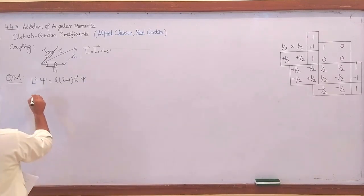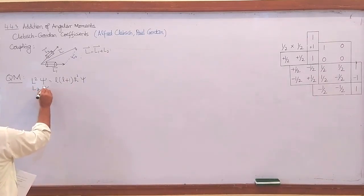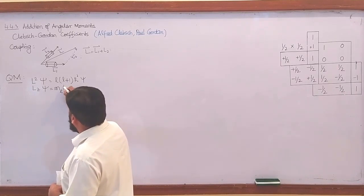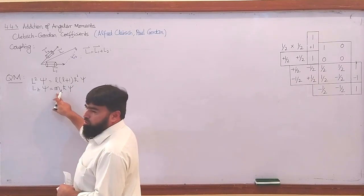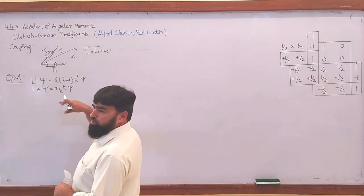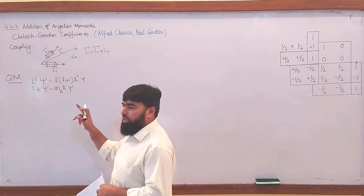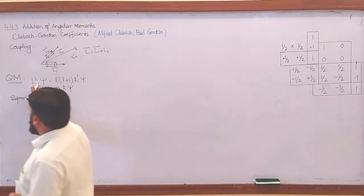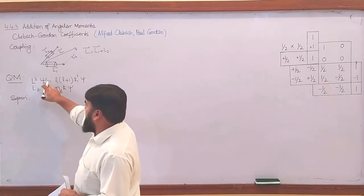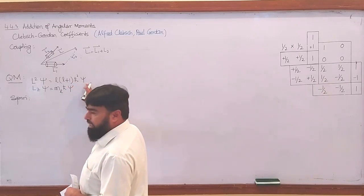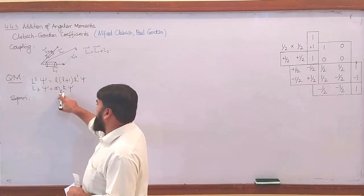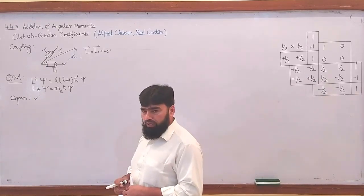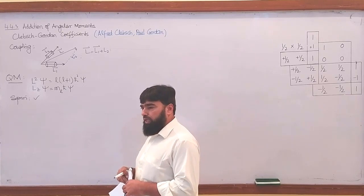Similarly, when I talk of the Z-component, I know that L_z ψ = M_L ħ ψ, so the M_L values are quantized, running from −L to +L including 0. When I come to spin, the spin is also quantized following the same relations: S² ψ = S(S+1) ħ² ψ, and S_z ψ = M_S ħ ψ. The same terminologies apply to spin angular momentum as they do to orbital angular momentum.